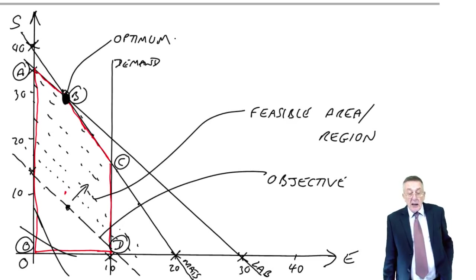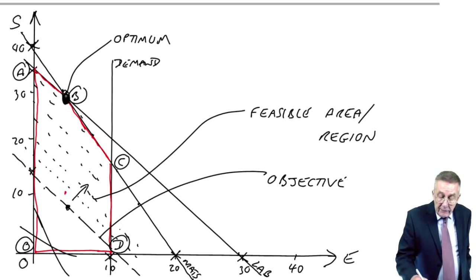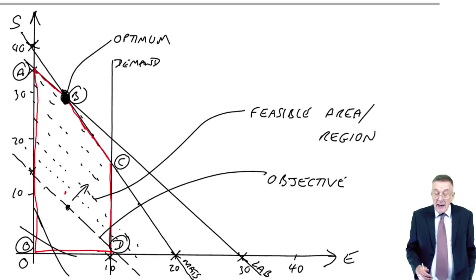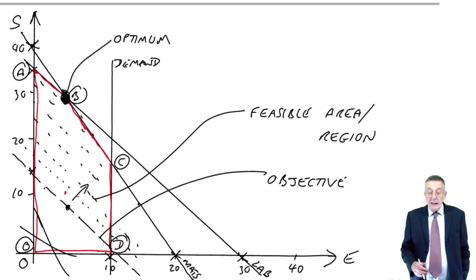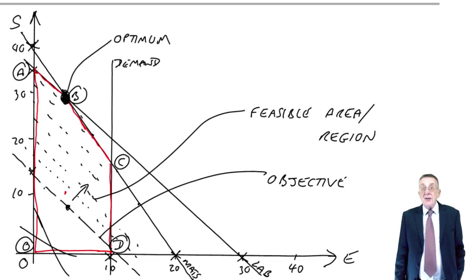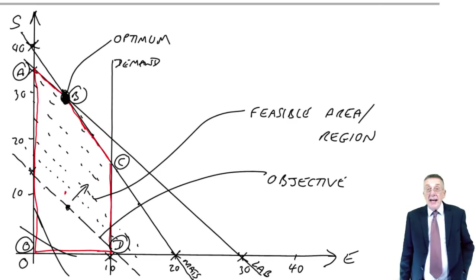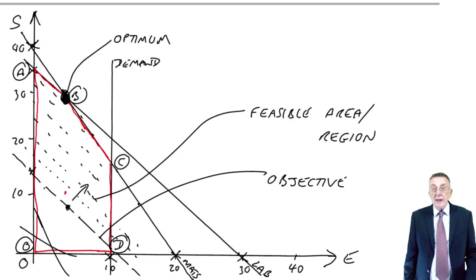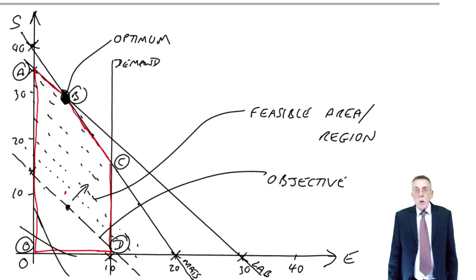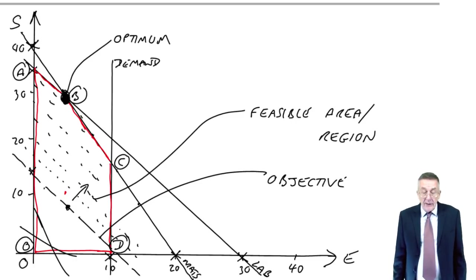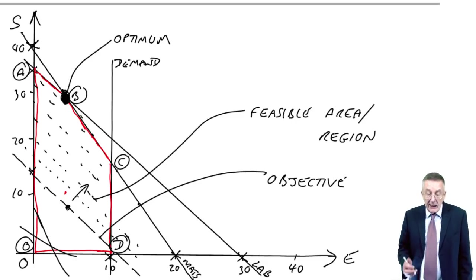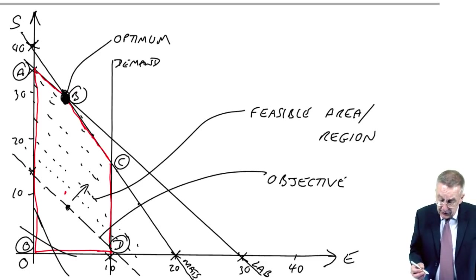So I do hope that made sense, but we're still not quite there because even though it's at point B, of course, we need to know how many S's and how many E's that represents. And it's too dangerous to read off the graph. You know, however accurate the graph is.